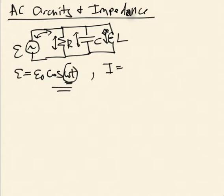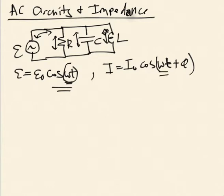So whether it's the current coming out of the EMF, through the resistor, through the capacitor, or through the inductor, it will have a form: cosine of omega t plus some phase phi. We already know omega — that's given. I-naught and the phase are what we don't know: how much current will flow, and will it flow with a phase shift relative to the driving term.